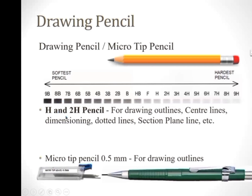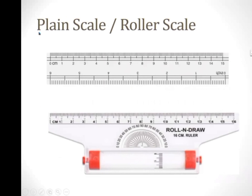We can use H and 2H pencils for drawing outlines, center lines, dimensioning lines, dotted lines, section plane lines, etc. We don't need to remember what grade of pencil is required for each type of line — we will learn this as we go ahead in this subject. You can also use a micro tip pencil of 0.5 mm thickness.